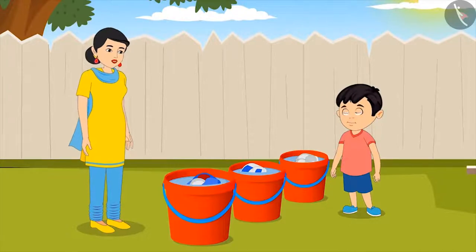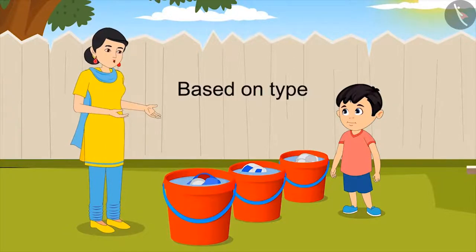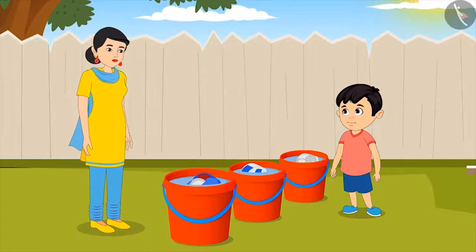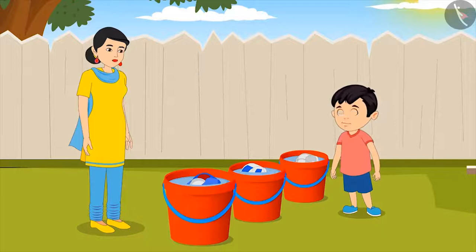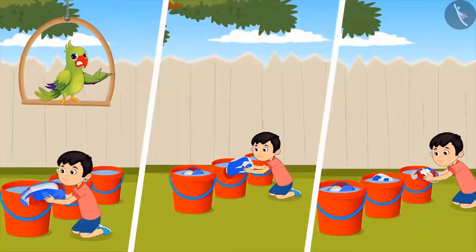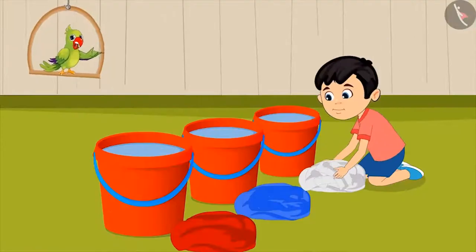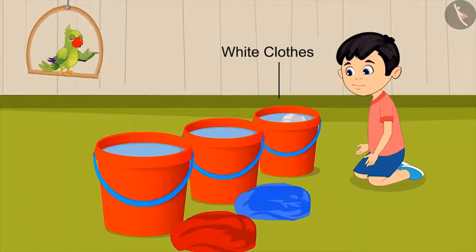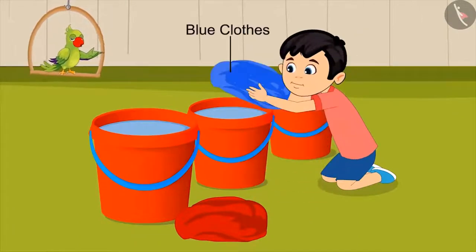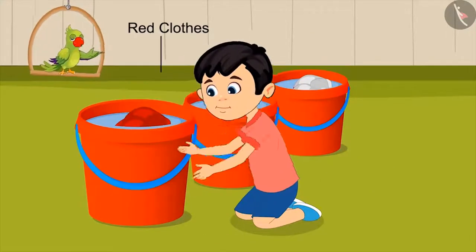His mother replies, 'Yes, son. I had asked you to separate all the clothes on the basis of their colour, but you have separated them based on their types.' Chotu takes all the clothes out of the bucket and then puts all the white clothes in one bucket, blue clothes in the second bucket, and all the red clothes in the third bucket.